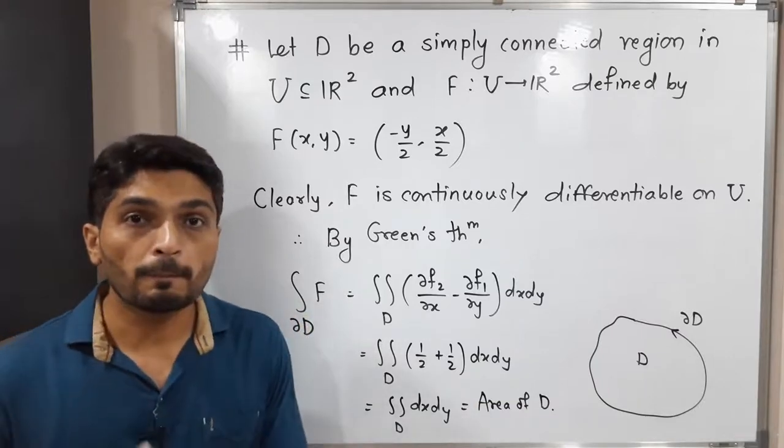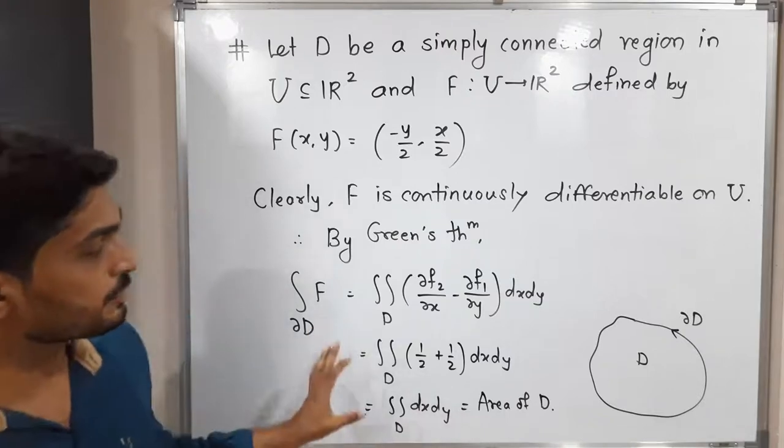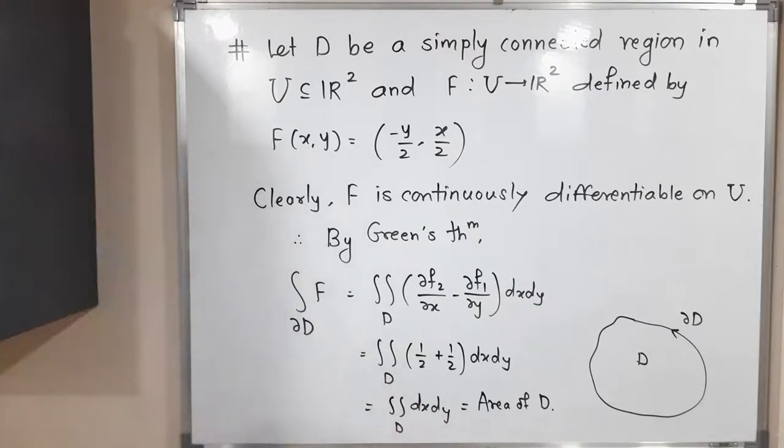That means using this line integral we can also find the area of any region. We calculate the line integral over the boundary of that region. So in this way Green's theorem says we can find area of D. Make a screenshot of it then we will stop. Thank you, bye bye.